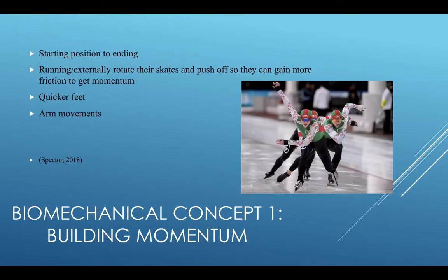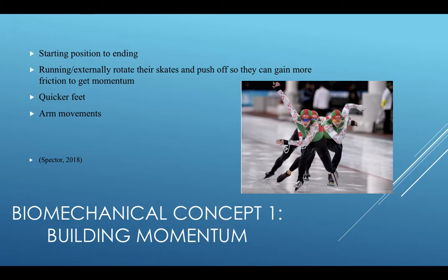Our first concept is building momentum. Momentum is the quantity of motion of a moving body, measured as a product of its mass and velocity. Skaters start out in a fast running motion with their legs and feet externally rotating as they push off the ice obliquely. While doing that, they swing their arms backward into the side — not back and forth, just back into the side — to help keep their body straight and get faster. Once they reach a fast enough speed, they start skating and put their arms behind their back, which helps propel them forward with momentum.